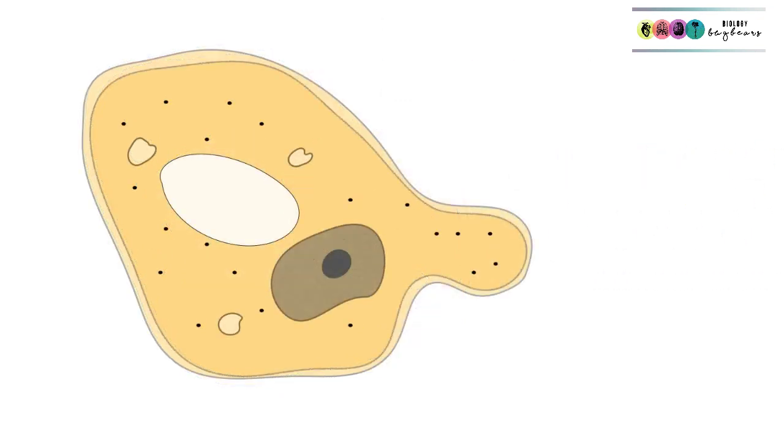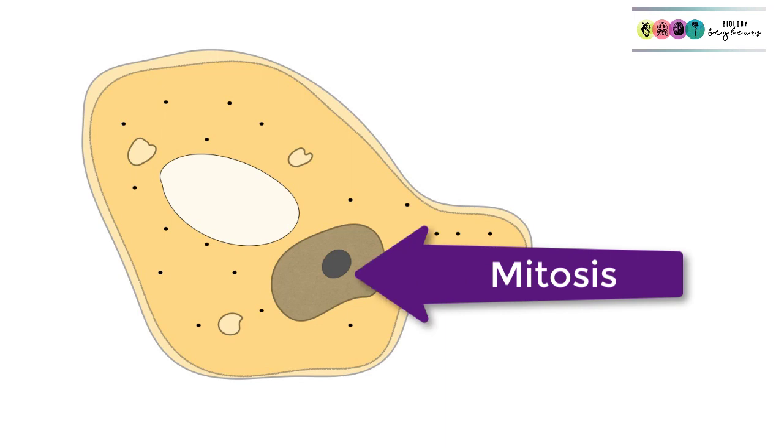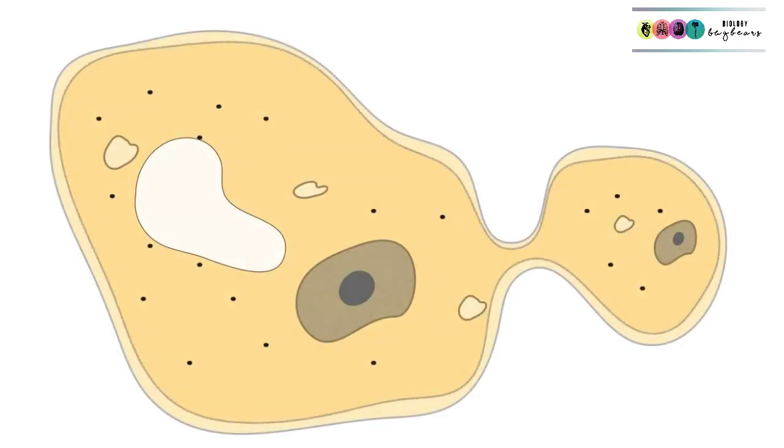The first thing that happens in budding is this extension or swelling known as a bud starts to form on the yeast cell, and then the nucleus of the yeast cell undergoes mitosis.